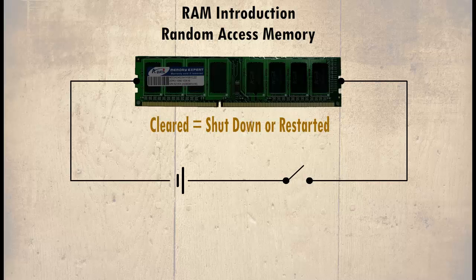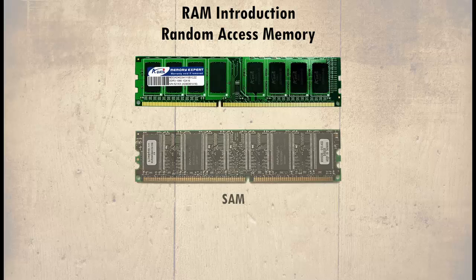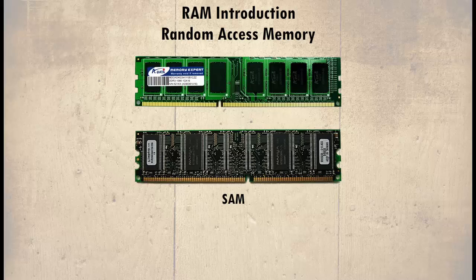RAM is called 'random' because the data is accessed in memory in a random manner. Let's take an example with SAM, or serial access memory, to explain the difference.